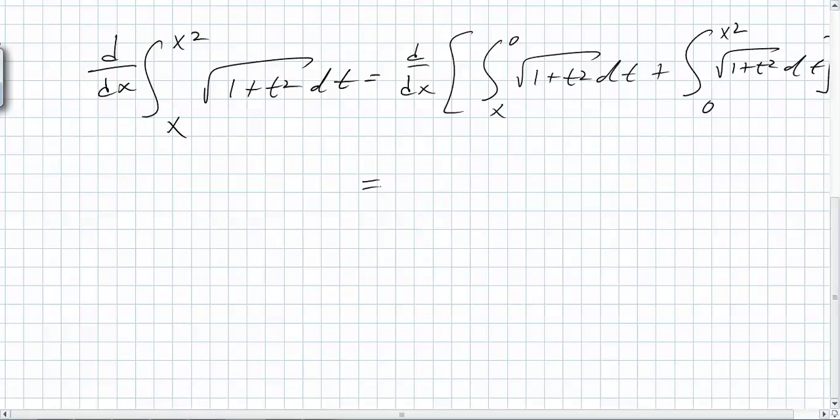Does that make sense? And then what's the problem with the first one? It goes from x to 0. You want it to go from 0 to x. So you end up with d/dx of negative 0 to x of this, plus the same thing right here. Same thing.